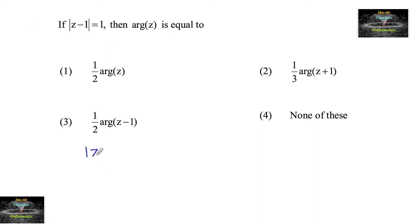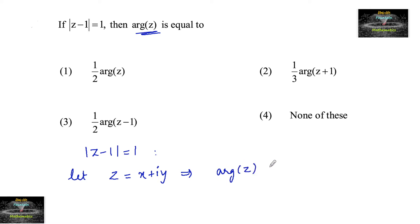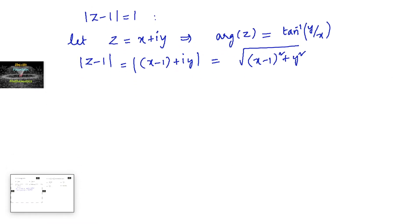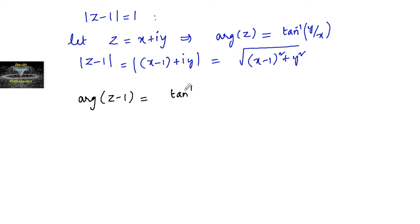If mod of z minus 1 is equal to 1, then argument of z is equal to? Let us consider z is equal to x plus iy. So argument of z is equal to tan inverse of y upon x. And mod of z minus 1 is equal to x minus 1 plus iy, which equals the square root of (x-1) squared plus y squared. Also, argument of z minus 1 is equal to tan inverse of y upon x minus 1.